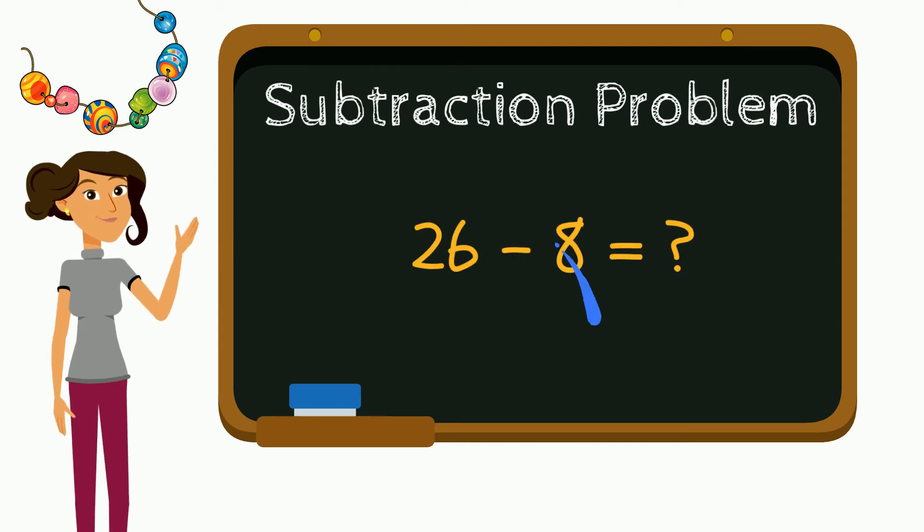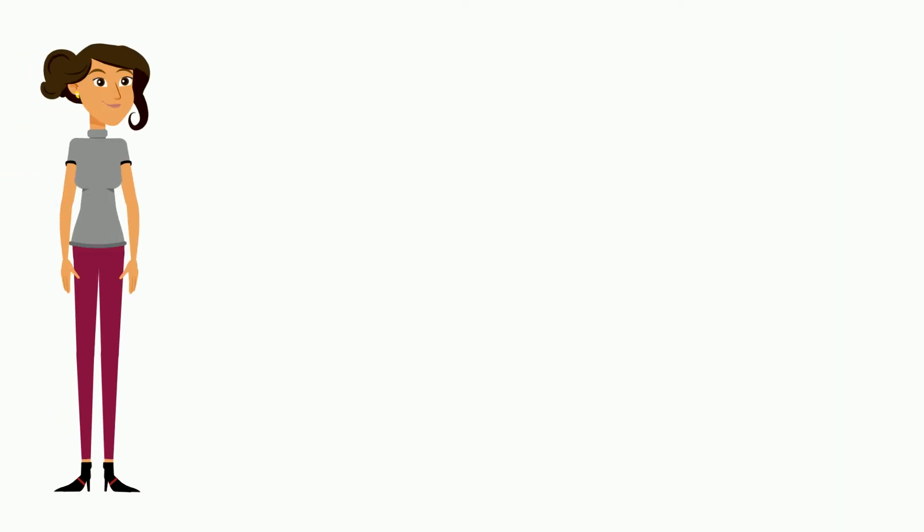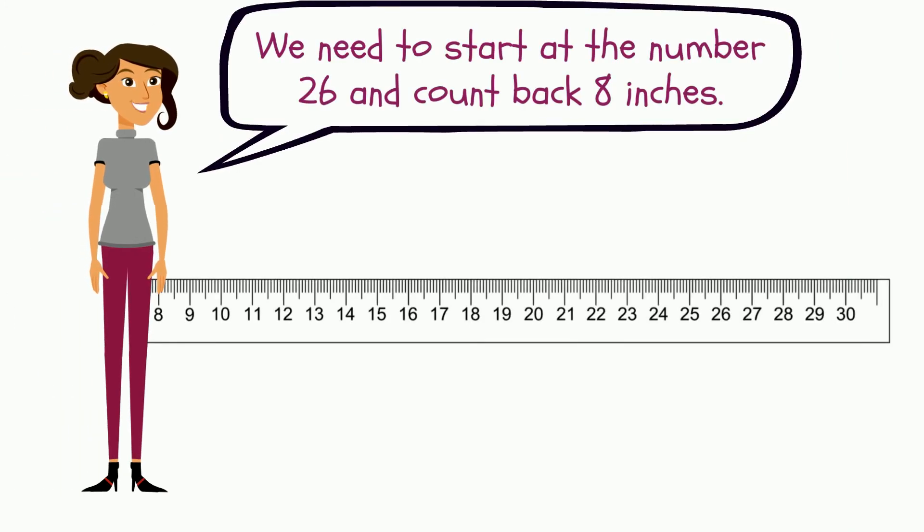I know that this is a subtraction problem because Brooklyn started with 26 inches and removed 8 inches of beads. Let's solve it by using part of a yardstick. We need to start at the number 26 and count back 8 inches. We count backwards to show we are subtracting. Let's start here. Count with me.